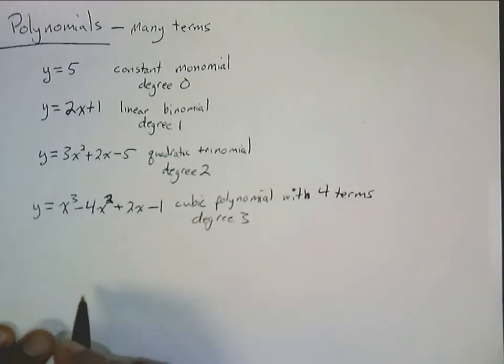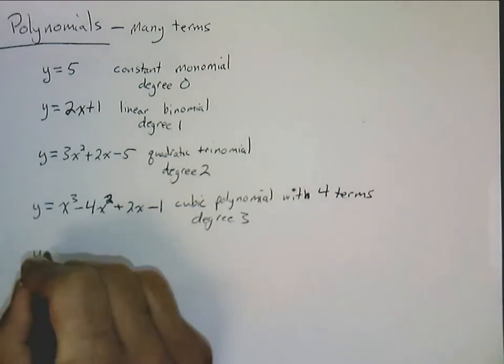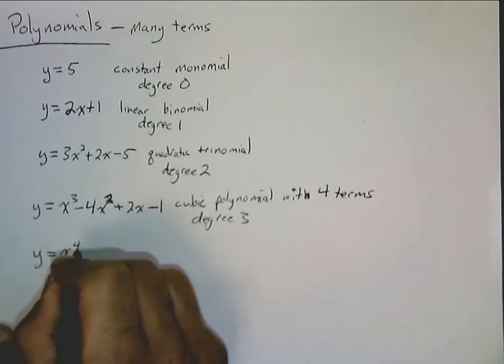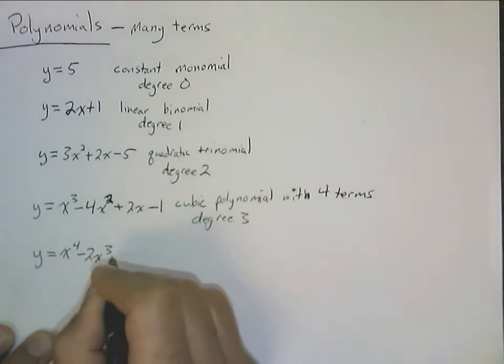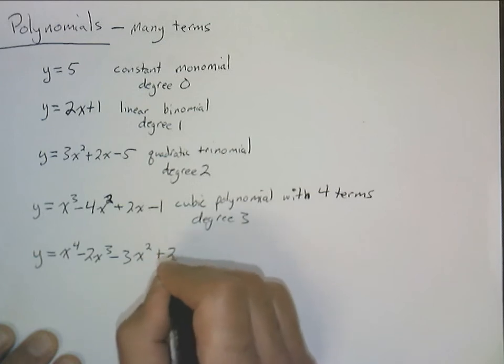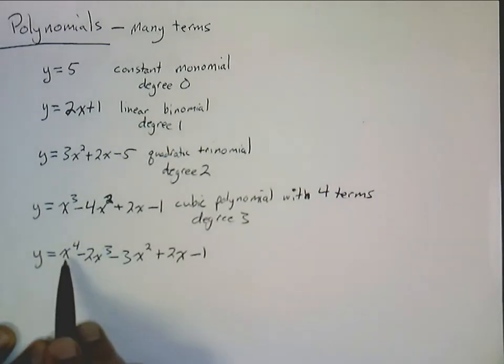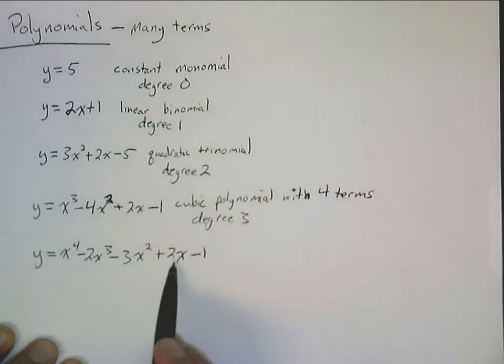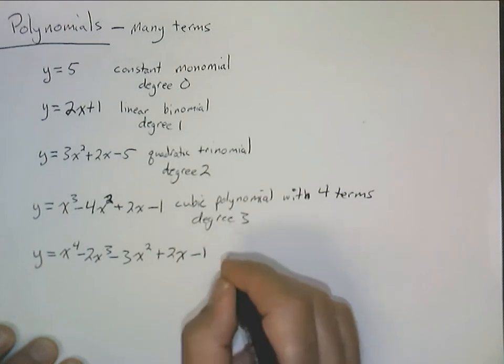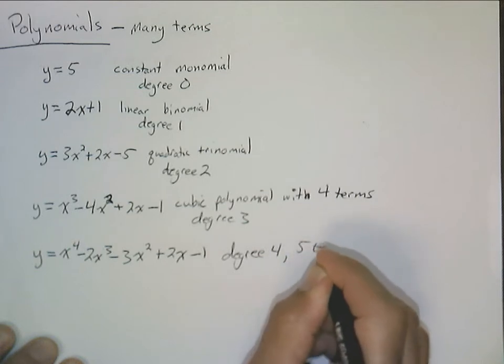Above degree three, we don't have any special names. We kind of do, but you don't hear them too often. So fourth degree, let's try this one. Y is equal to x to the fourth minus 2x cubed minus 3x squared plus 2x and what the heck, minus one. This is a degree four polynomial. Sometimes we call this a quartic, but usually just say it's degree four. And now it has one, two, three, four, five terms. So that is degree four. And that is five terms. And that's how we classify polynomials, by the degree and by the number of terms.